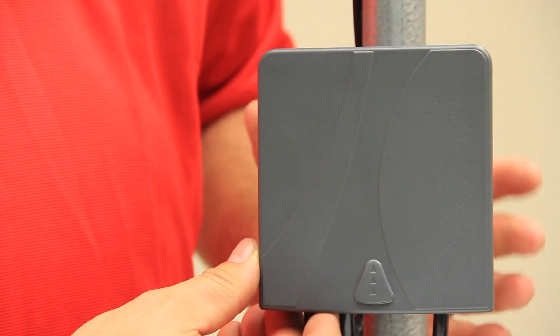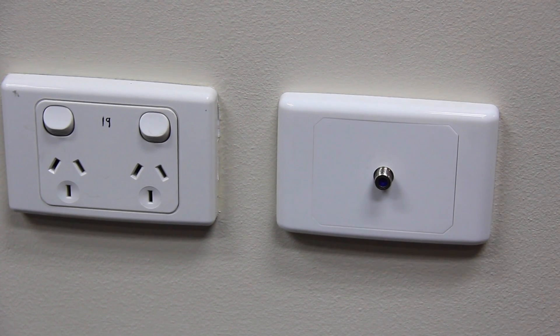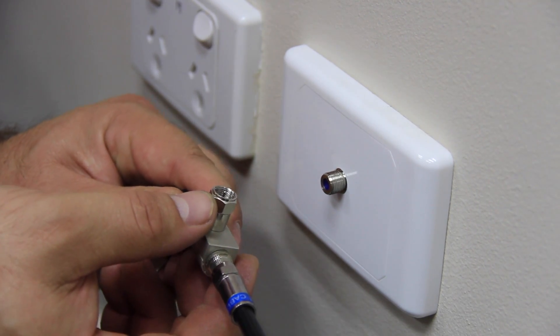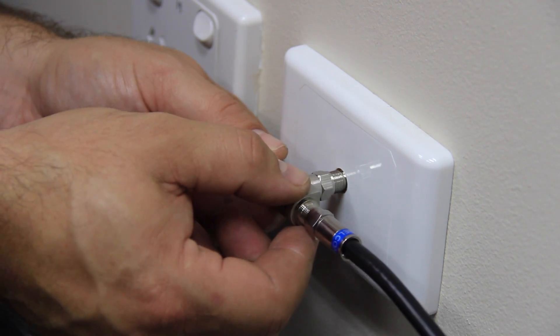Once you have your TV lead securely connected to your power supply, then connect it to your wall plate. If it is an F type wall plate, the power supply will connect directly to it without any adapters.